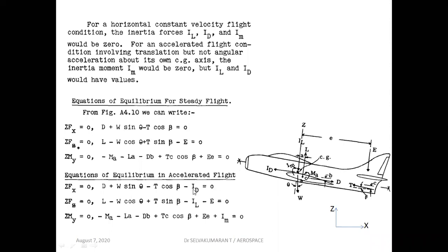In accelerated flight, the inertia forces come into the picture. You include ID acting to the left, IL acting downward, and IM acting clockwise about the CG — so it is positive. Always remember: the inertia force acts in a direction opposite to the direction of the acceleration. This is very important.